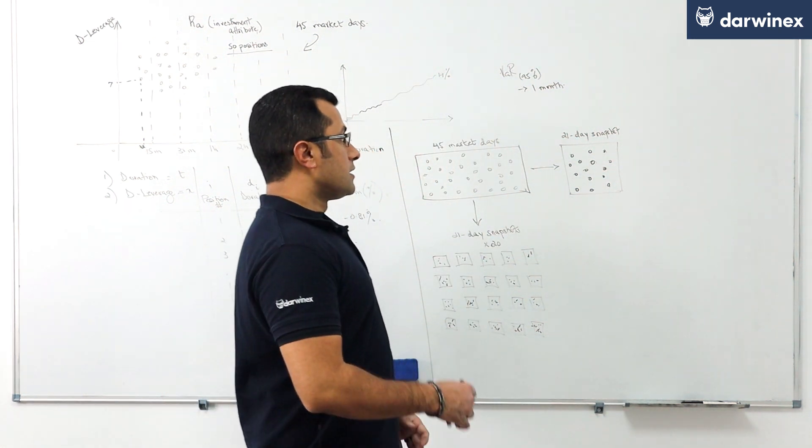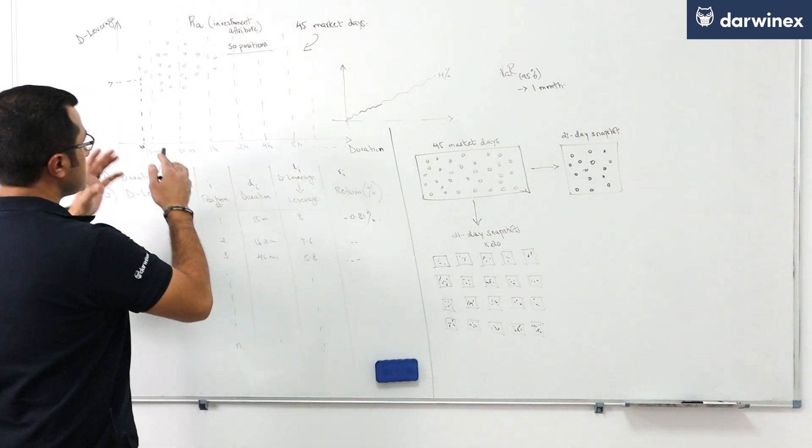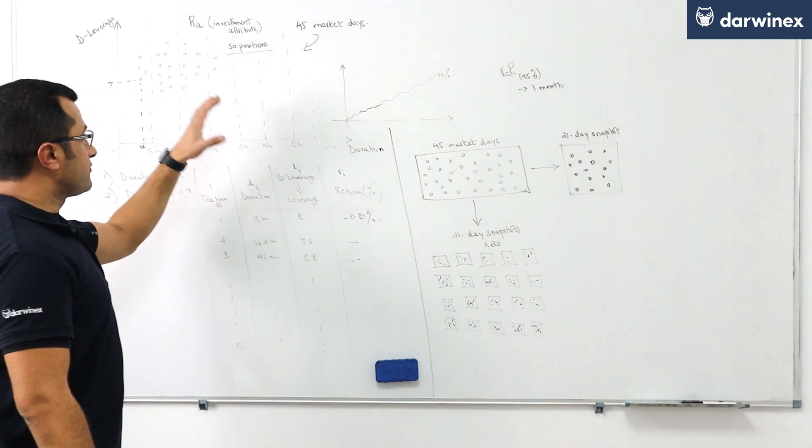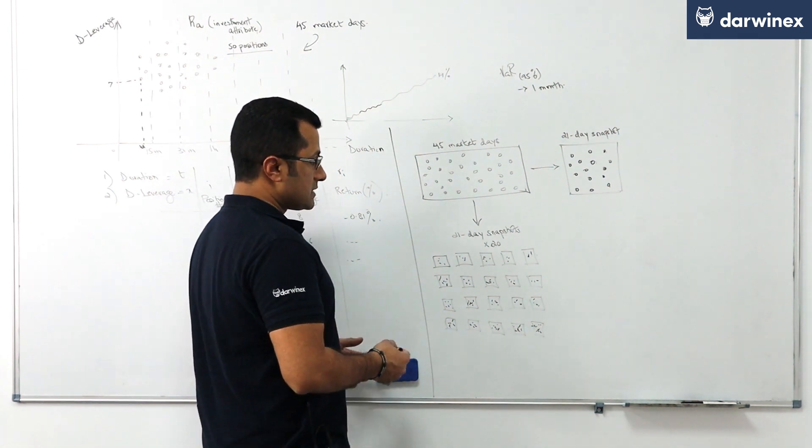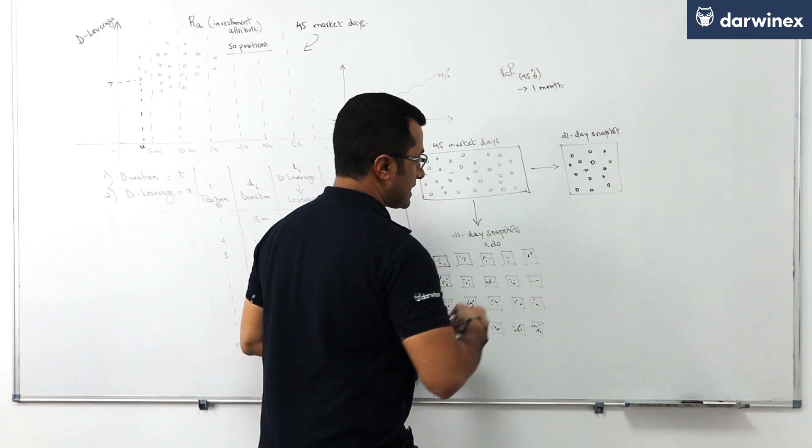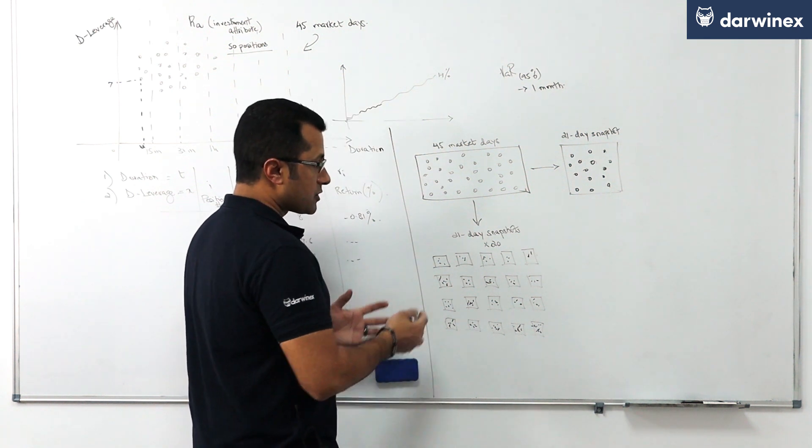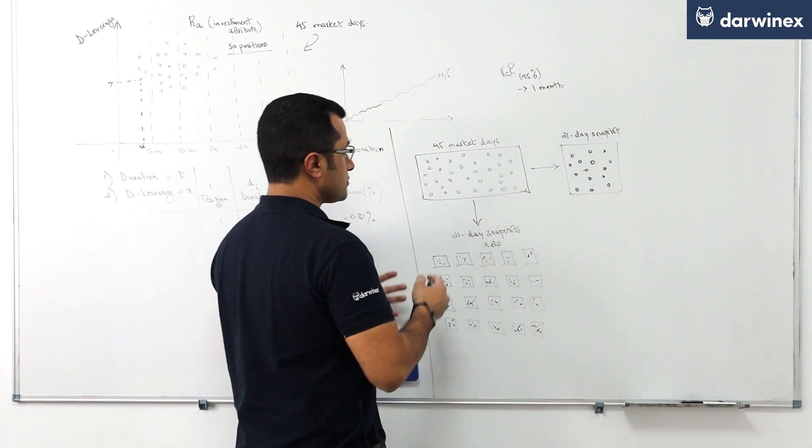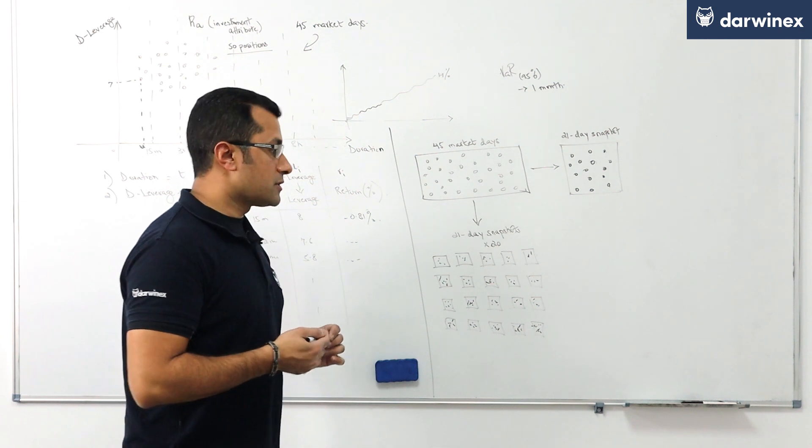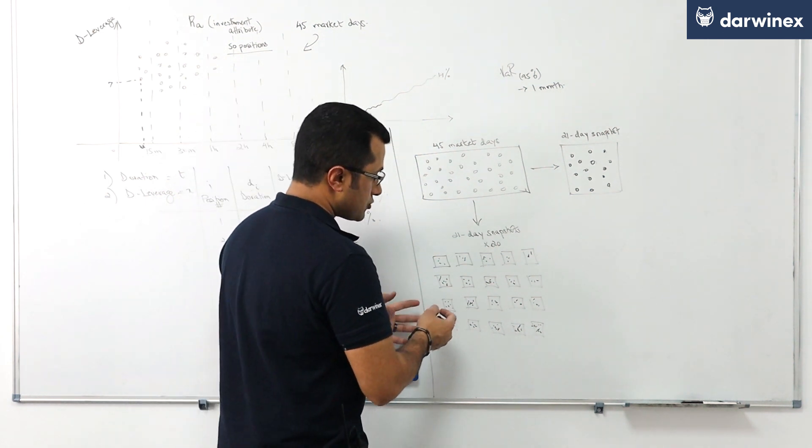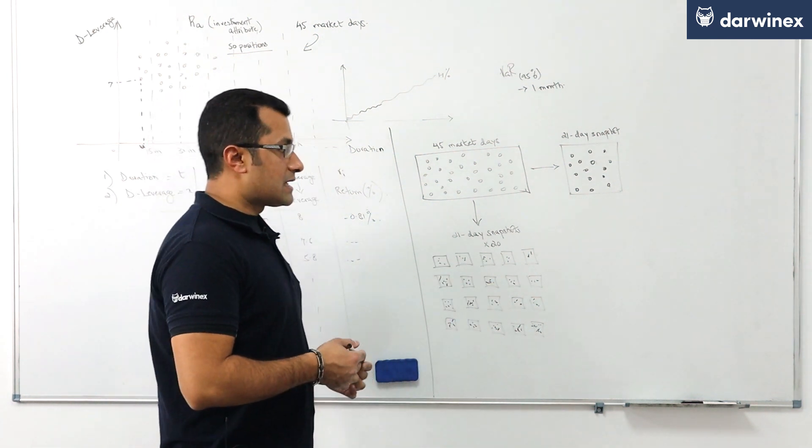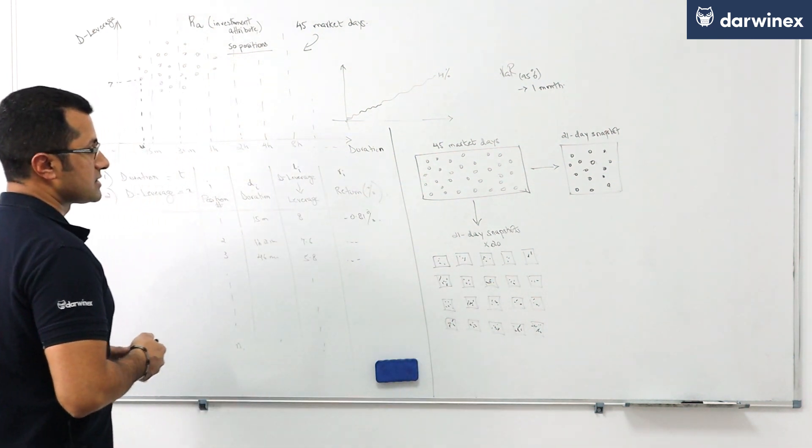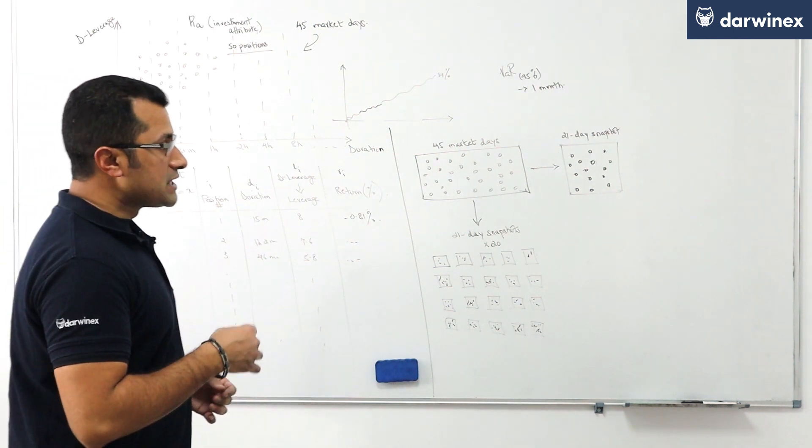Therefore, using the position data we have that contains duration and d leverage for each position that was taken during that reference period, we need to construct 21-day snapshots. And to capture all of the behavior that ensued in this 45 market day reference period, we are going to go ahead and construct 20 months worth of 21-day snapshots, encapsulating all that risk-taking behavior.